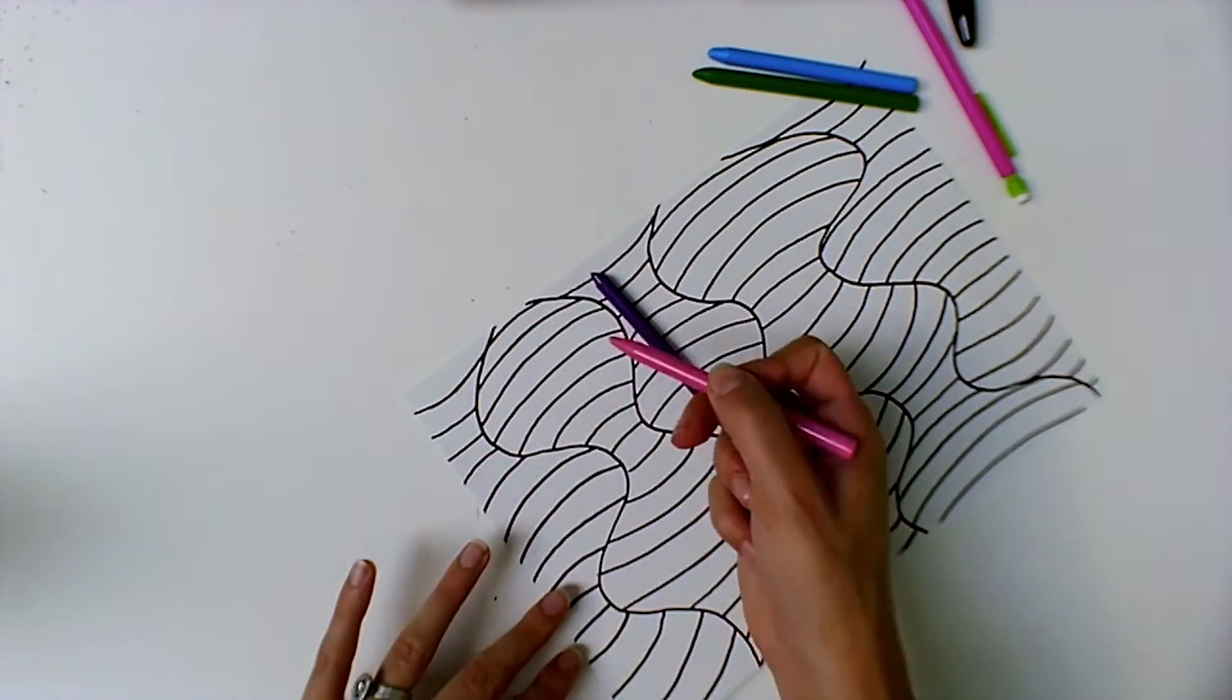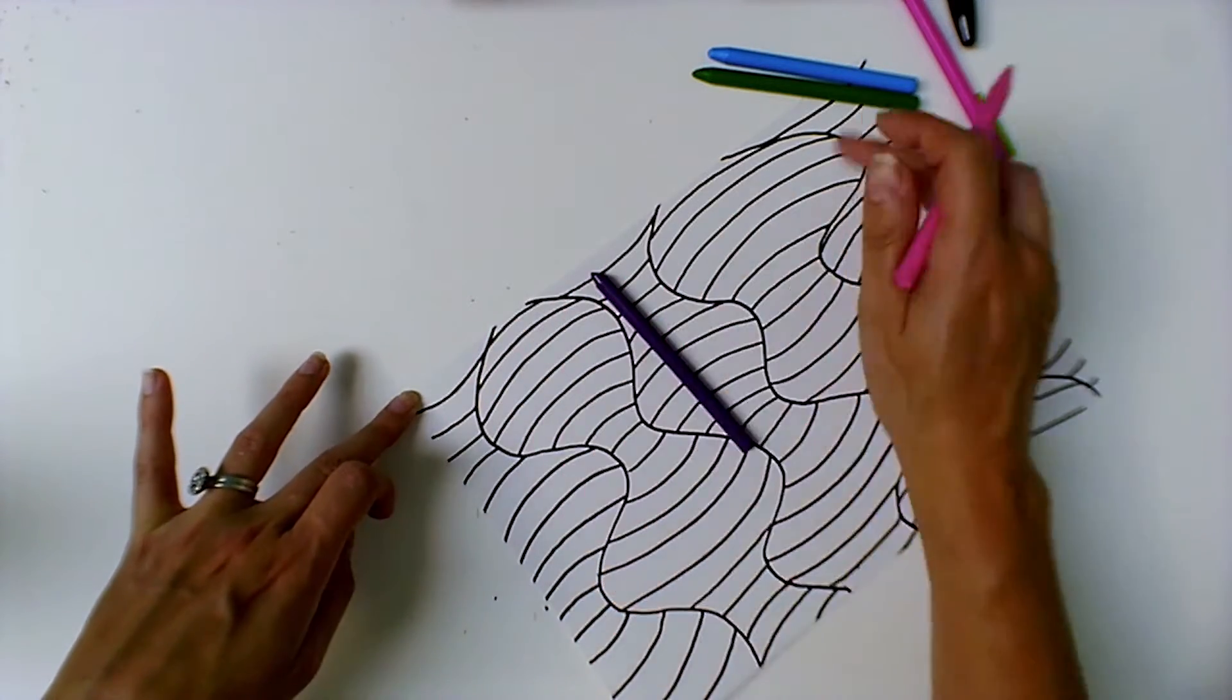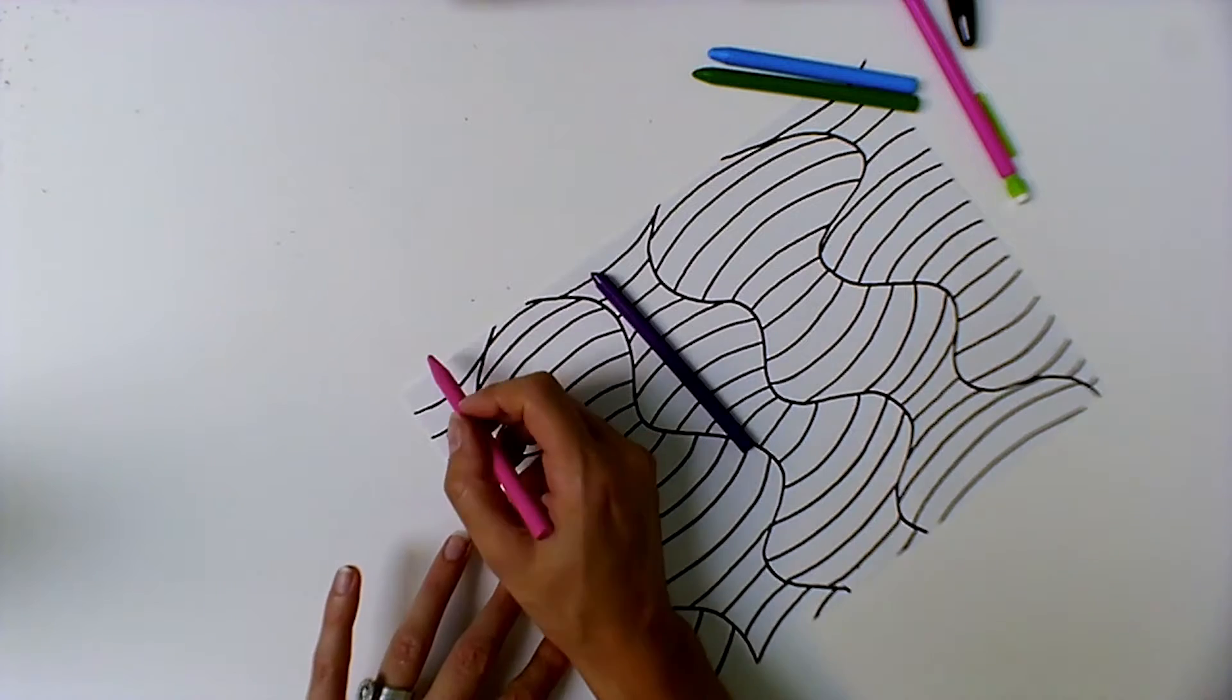And now we're actually going to make a double pattern. So we're going to do a pattern within each section and then each section becomes a pattern to the next one.